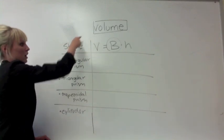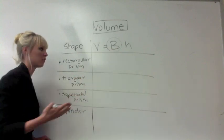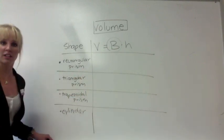So in order to find out what the formula for the volume of each prism is, you replace this big B with the formula for the area of the base.